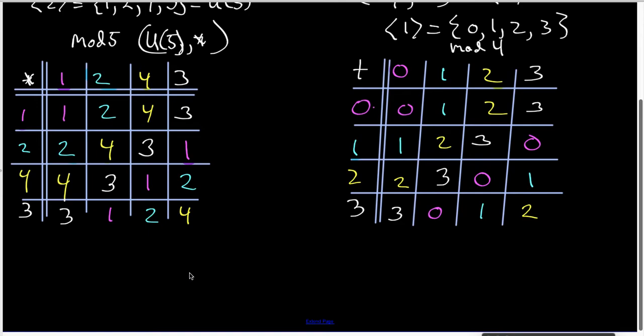I want to notice that the 1 in U5 is the same color as the 0 inside Z4. And those were both in this color.